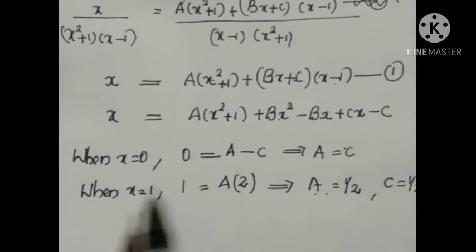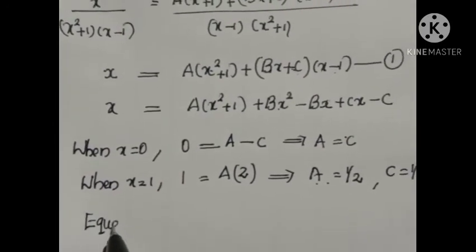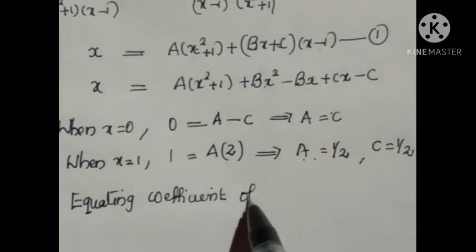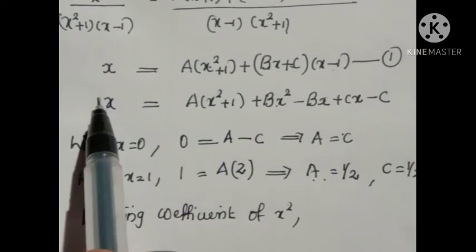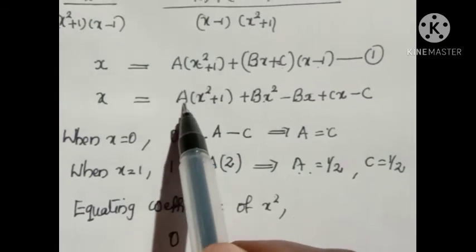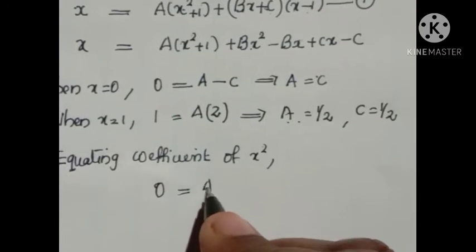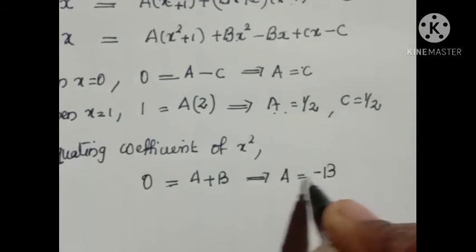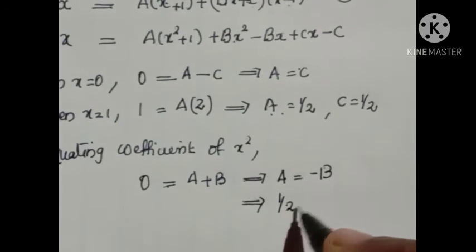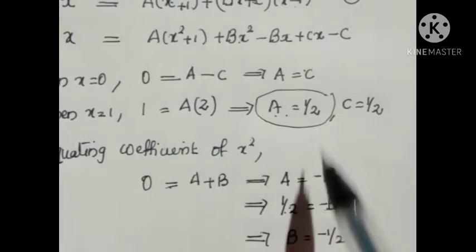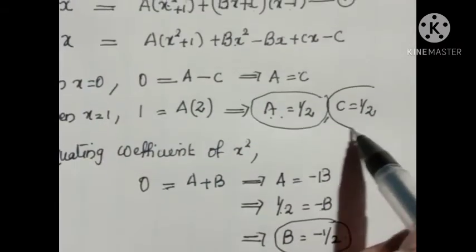Now we need to find B. To obtain B, equate the coefficient of x² on both sides. On the left side there is no x² term, so the coefficient is 0. On the right side, the coefficient of x² is A + B. So A + B = 0, implying B = −A = −1/2. Thus A = 1/2, B = −1/2, C = 1/2.